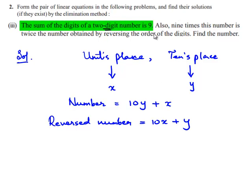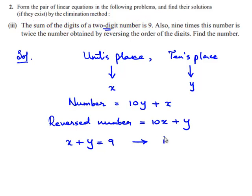Two conditions are given in the problem. One of them is sum of the digits is 9. That is, x plus y is equal to 9. Name this as equation number 1.